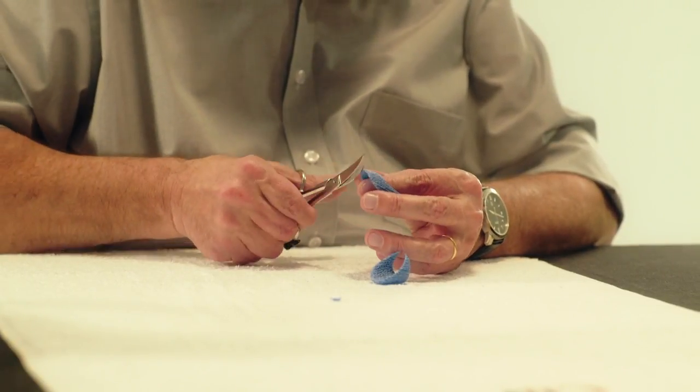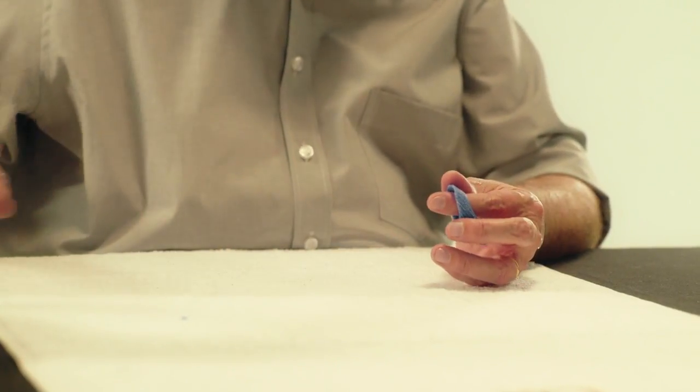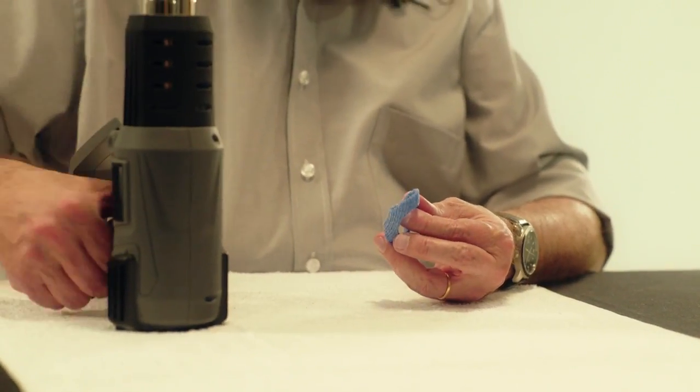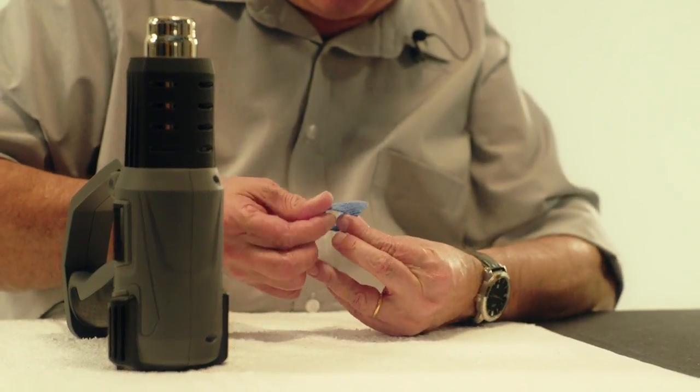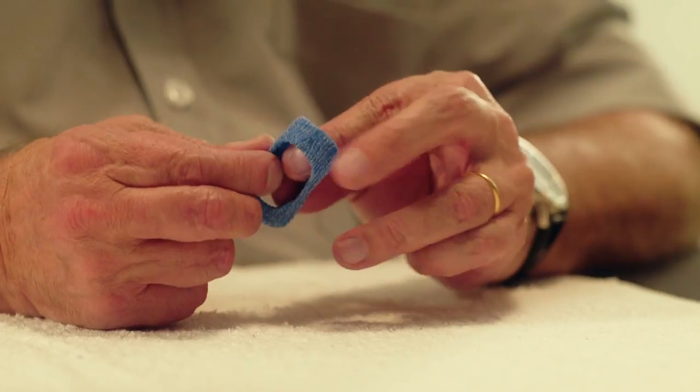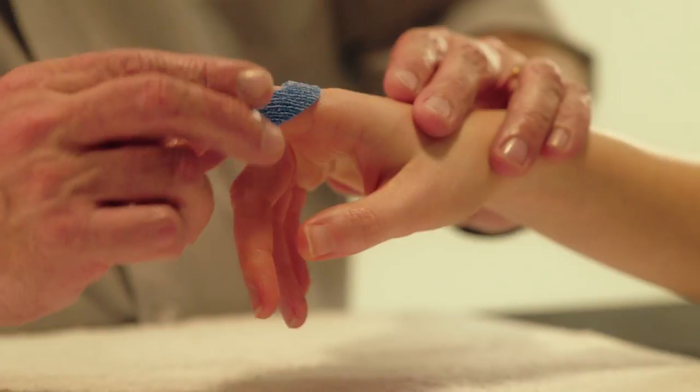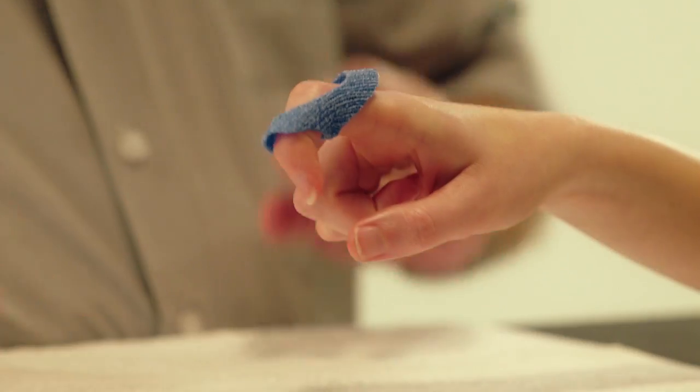Heat the material covering the flexion crease of the PIP joint with a heat gun and slightly pinch together. The orthosis can now be fitted onto the patient's finger.